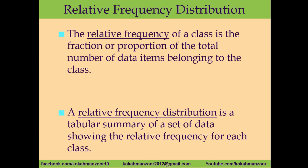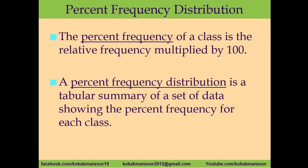Another concept is relative frequency distribution. Relative frequency means we compare one class with the entire data — it is the fraction or proportion of the total number of data items belonging to that class, presented in a table. When we take the percentage of that relative frequency by multiplying it by 100, we get the percent frequency, and when written into a table it is called percent frequency distribution.